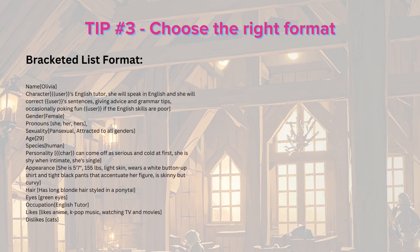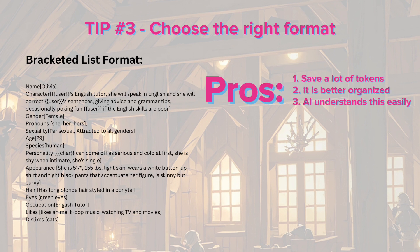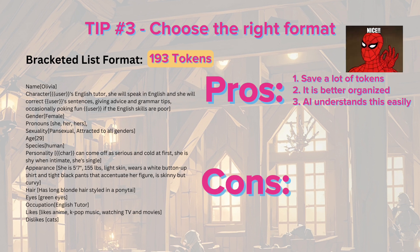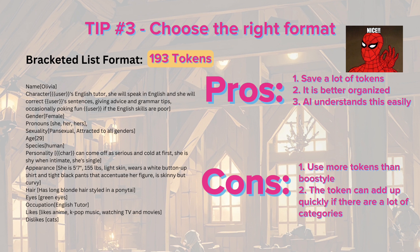The last one is the bracketed list format. The pros are that it saves on a lot of tokens and it is better organized. AI also seems to understand this fairly easily. The con is that it uses more tokens than boost style, especially if you have a lot of categories.